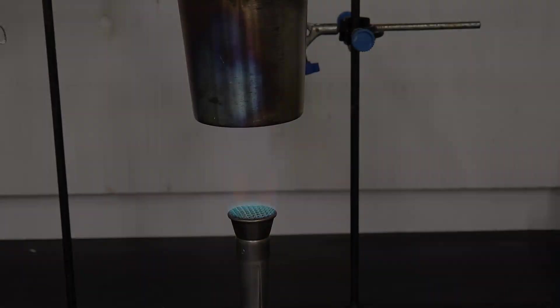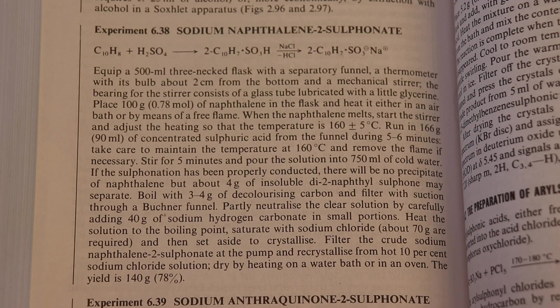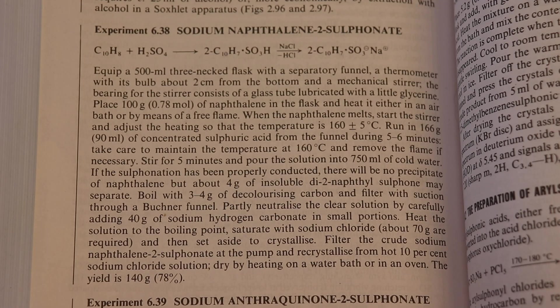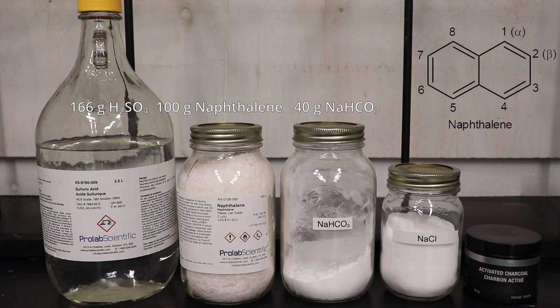The first step of the synthesis is the sulfonation of naphthalene. Following the procedure in Vogel's Practical Organic Chemistry, I used 100 grams of naphthalene, which can be acquired as mothballs.